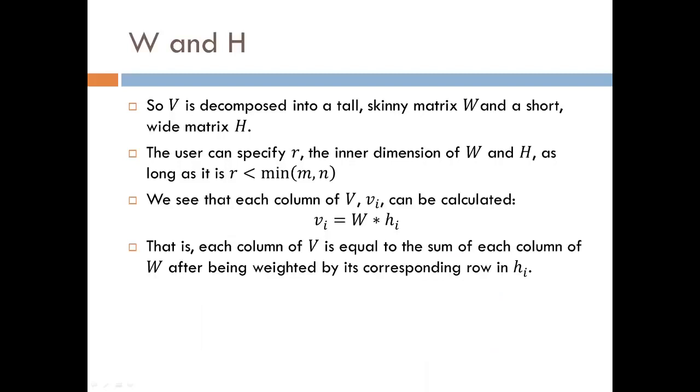Now, in other words, we are decomposing V into a tall, skinny matrix and a short, wide matrix, where the inner dimension R is set by the user and is less than the smallest dimension of V. We see that the i-th column of V is calculated by multiplying the entire matrix W by the i-th column of H.